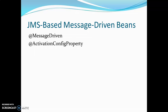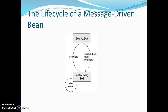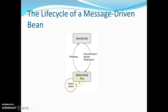JMS-based message driven beans make use of two annotations: @MessageDriven and @ActivationConfigProperty. The lifecycle of a message driven bean works like this: we create a new instance, make use of all the injections, after creation of the instance we make use of all the required assignments, the instance is created and present inside the method pool, and using the business method we send all the messages to the clients that have been requested. We make use of the PreDestroy function before the instance is destroyed.